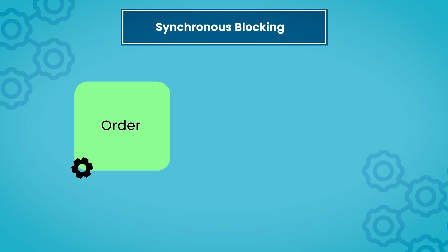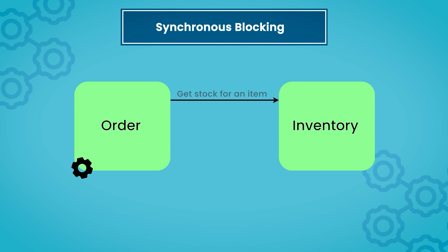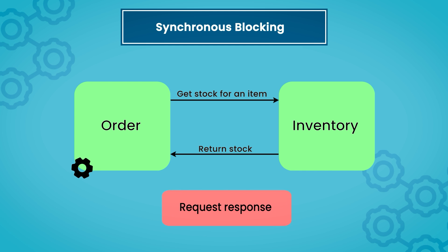Let's start with an example of synchronous blocking communication. We have an order service and an inventory service. The order service sends a request to get the stock for an item and will not continue any operations until the stock status is returned from the inventory service. This is a typical example of synchronous blocking, implemented using request-response via REST APIs or RPCs.